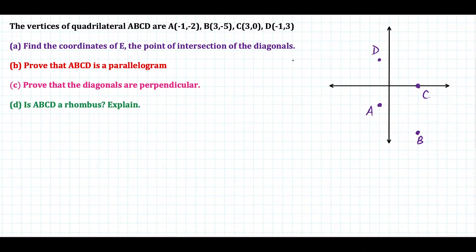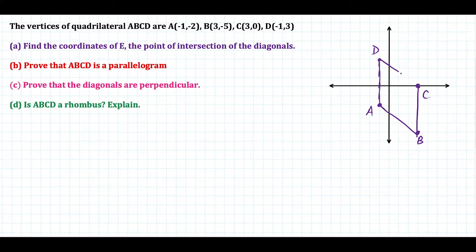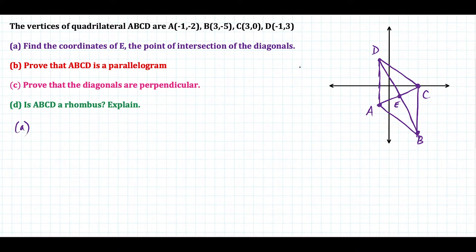We're going to do this in stages. The first thing we want to do is find the coordinates of E, the intersection of the diagonals. One of the things you need to know about parallelograms is that the diagonals bisect each other, which means they share the same midpoint. So to show all the work for part A, we find the midpoint of diagonal AC and the midpoint of diagonal DB and show that they're the same.